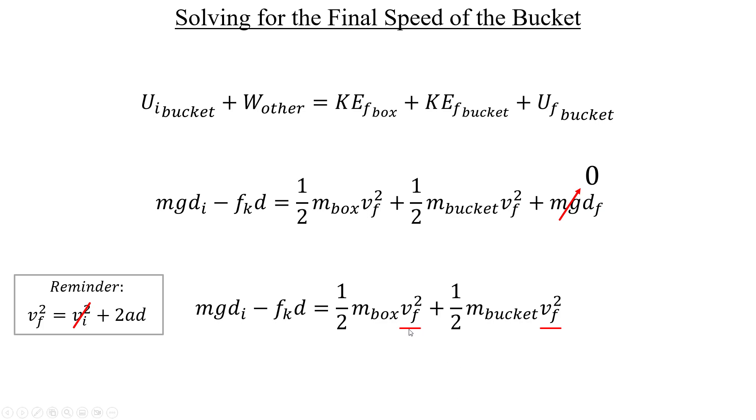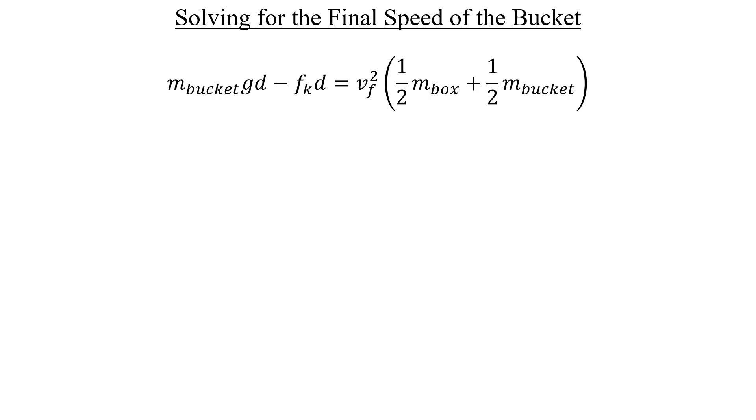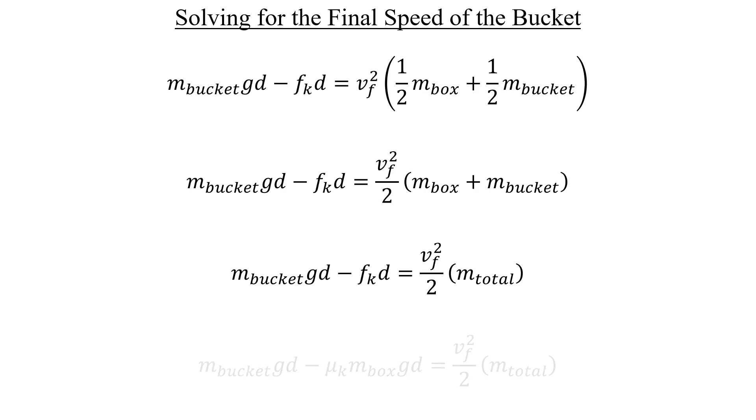Let's go ahead and factor this squared final velocity out from the right-hand side. There's a one-half on both masses in the parentheses here, so that can be pulled outside as well. Let's do ourselves a small favor to save on some writing, too. We can call the sum of the masses of the box and the bucket the total mass of both, like this. Next, I'll exchange the force of kinetic friction here with its definition, which is µk times the normal force acting on the box without the gravel on top.